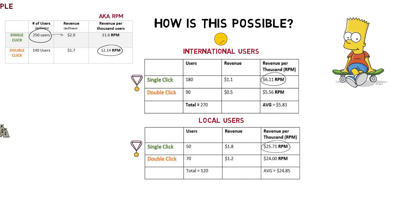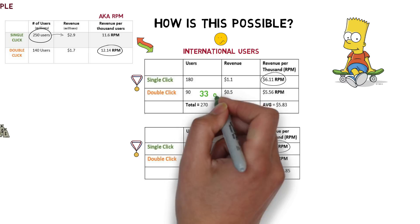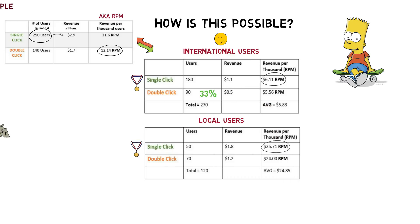Simpson's Paradox at play again. The grouped up data has a hidden factor that tells the opposite story of the ungrouped data. In this case, the hidden factor was that only 33% of international users were shown the double-click page, while 58% of the local users were shown the double-click page. And in general, local users, as you can see in the data, had a much higher RPM than international users.